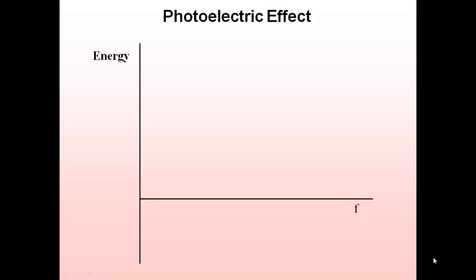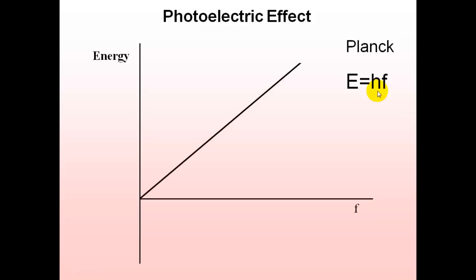In the photoelectric effect, we have a graph of energy against frequency F. Taking Planck's equation E = hF, we know that E is proportional to F, where the gradient equals h. We can plot this as a straight line going through the origin.